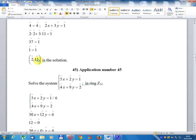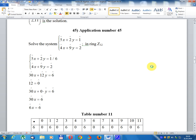Application number 45: Solve the system in ring Z₁₂: 5x + 2y = 1, 4x + 9y = 2.